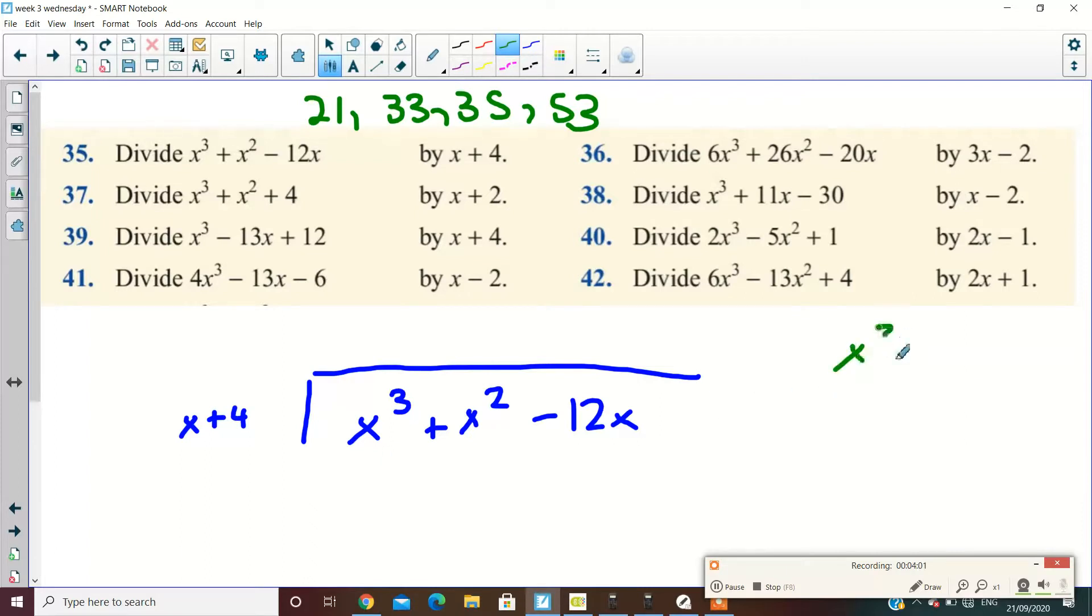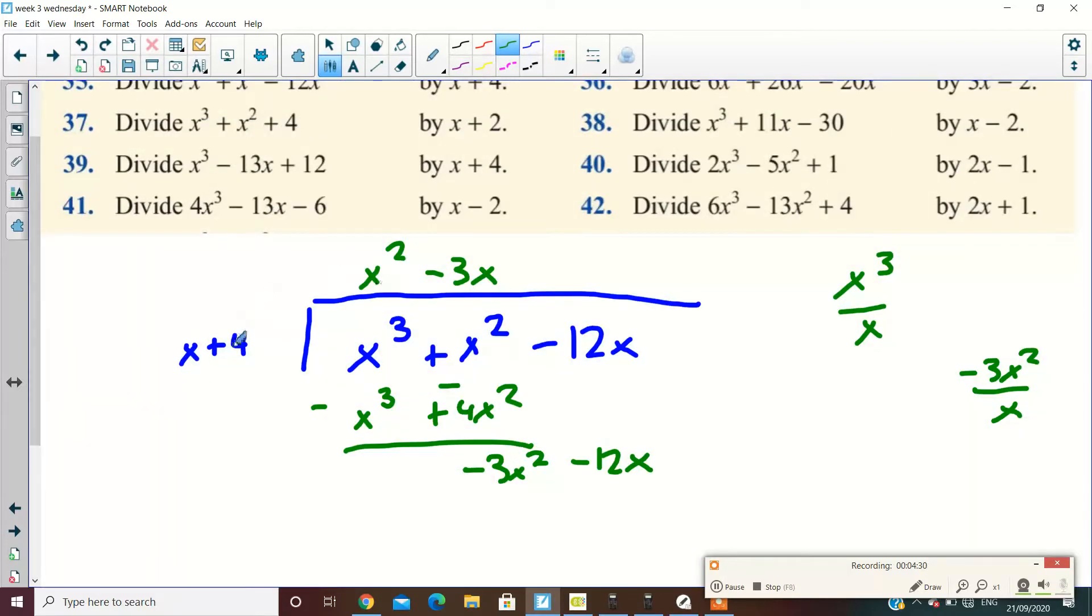x³ divided by x. x², yeah? Multiply it out. x³ plus 4x². Subtract. Minus. By x. Minus 3x² divided by x. Minus 3x. Multiply it out. Minus 3x² minus 12x. And then what happens? 0. And you're done. Okay.